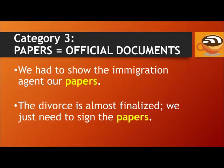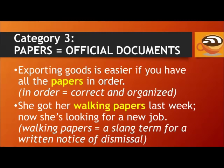For example: We had to show the immigration agent our papers. The divorce is almost finalized — we just need to sign the papers. Exporting goods is easier if you have all the papers in order. In order, in this case, means correct and organized.